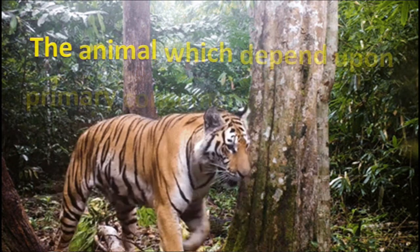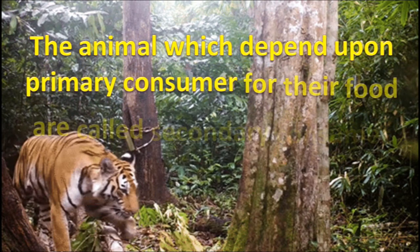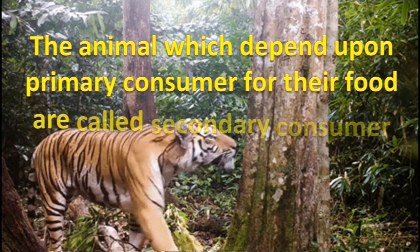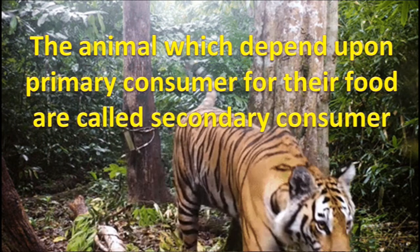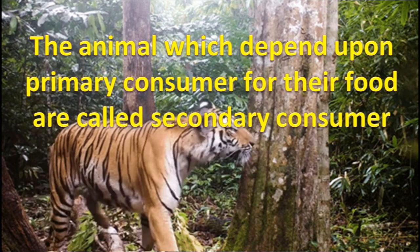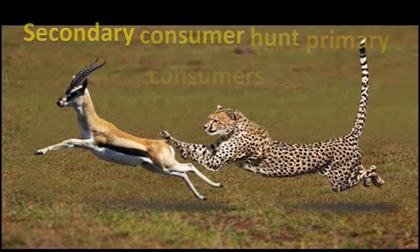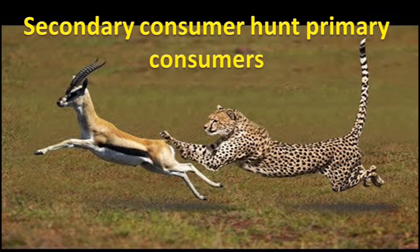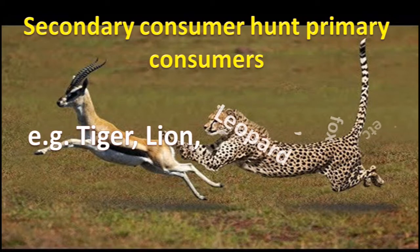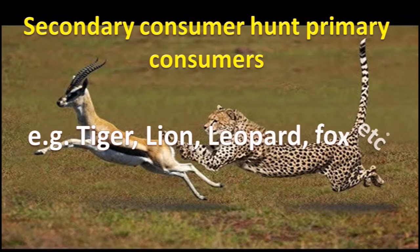The animals which depend upon primary consumers for their food are called secondary consumers. Secondary consumers hunt or feed on primary consumers. Tiger, lion, leopard, and fox are secondary consumers.